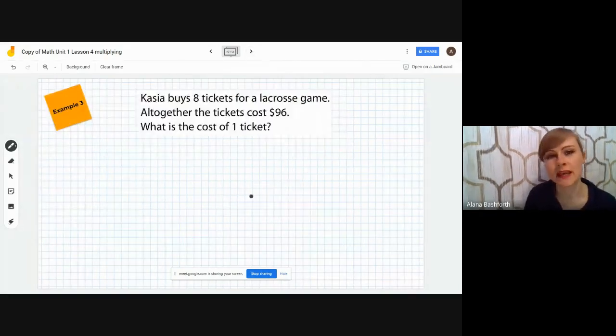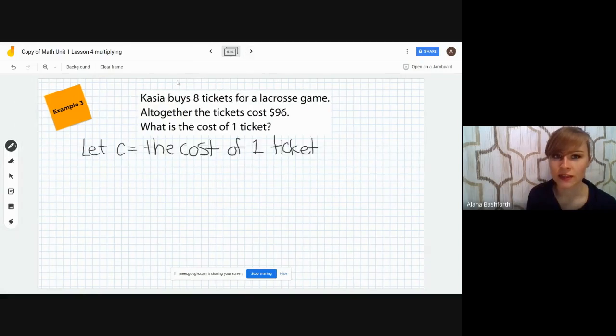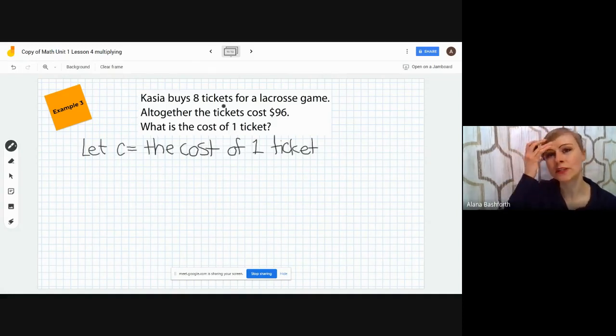Our last example is Casia buys 8 tickets for a lacrosse game. Altogether, the tickets cost $96. What is the cost of one ticket? First thing we need to do is assign a letter to our unknown, and our unknown is what the cost is of one ticket. Since we are thinking about the cost, I chose C. Let C equal the cost of one ticket. And remember, it doesn't matter what letter you pick. It's just a letter. But it always makes sense to make it match with what you're looking for.